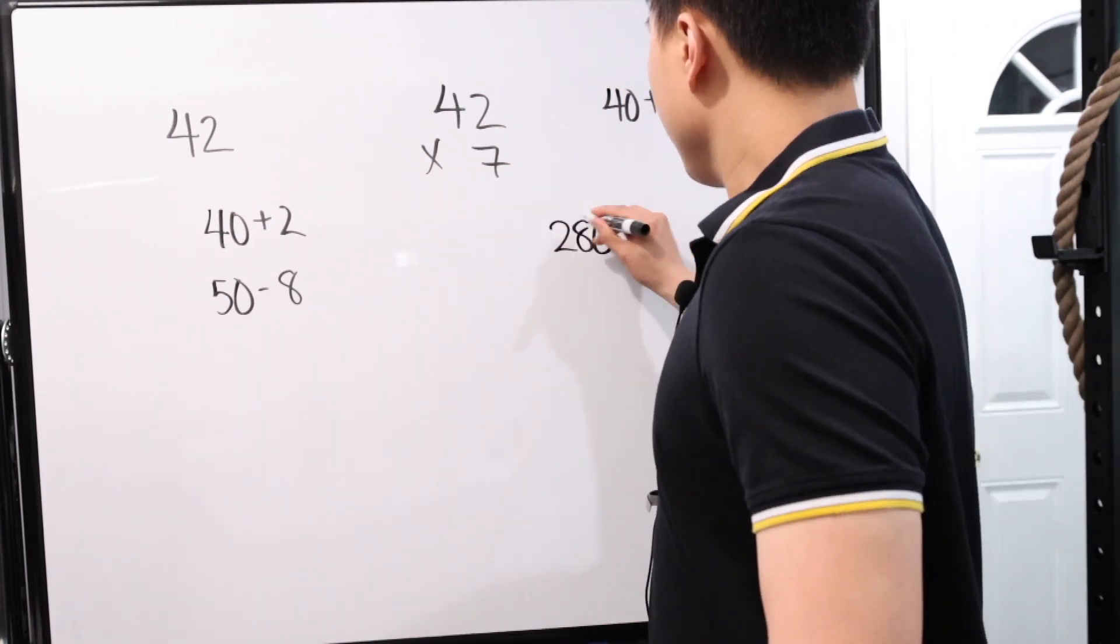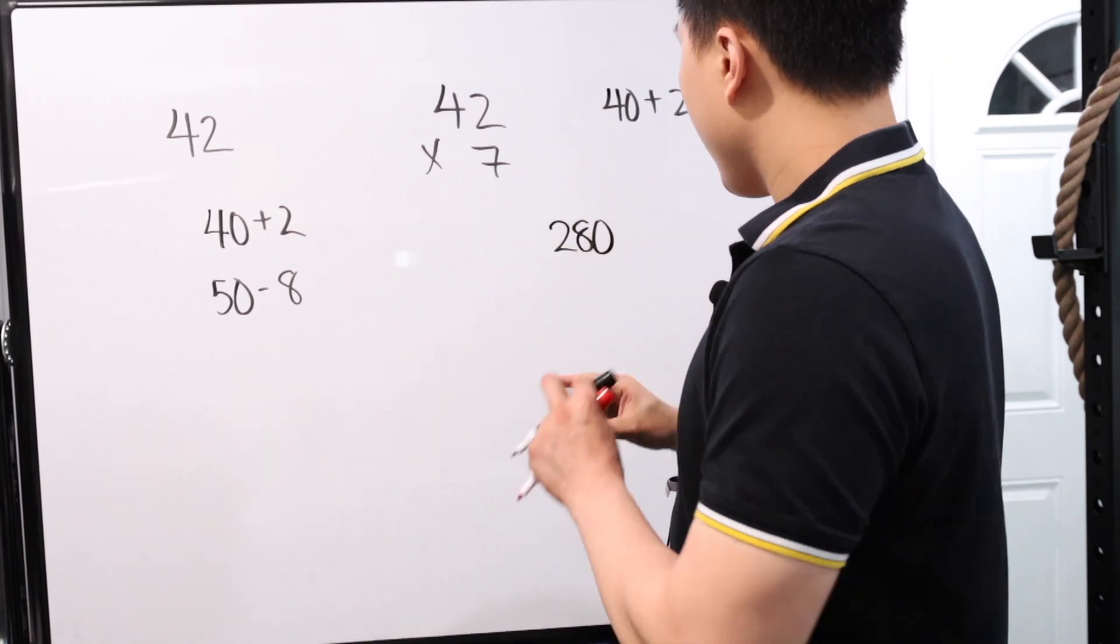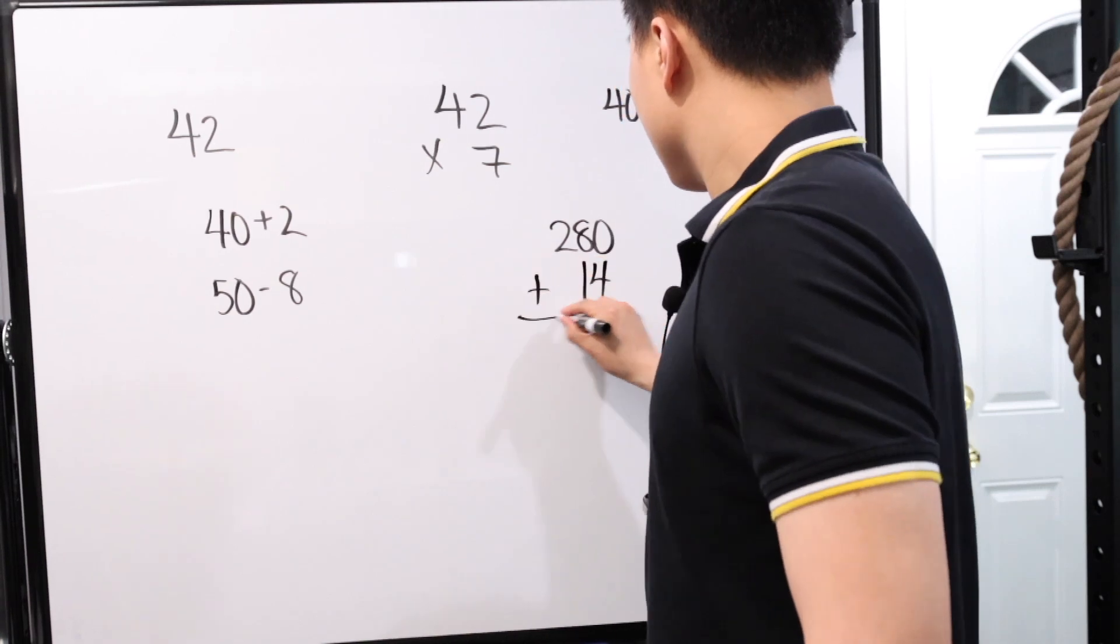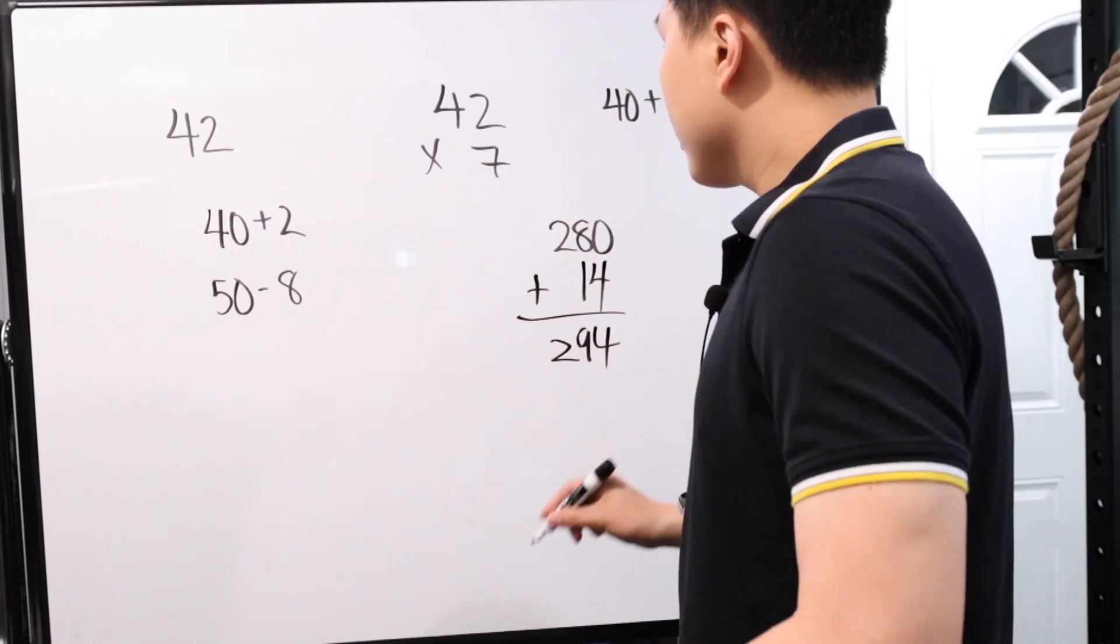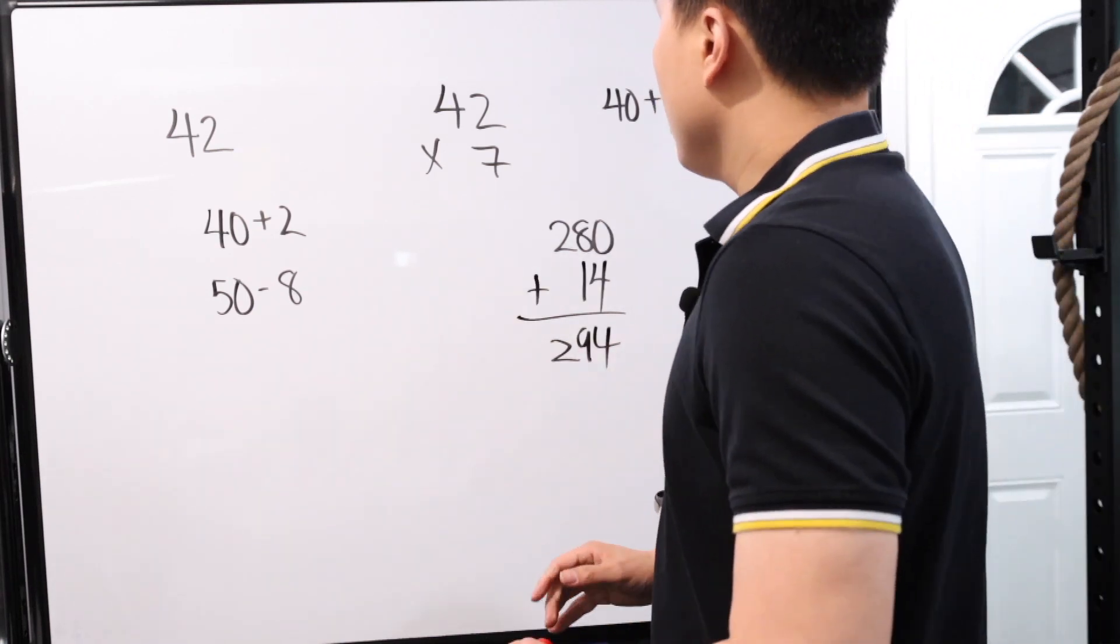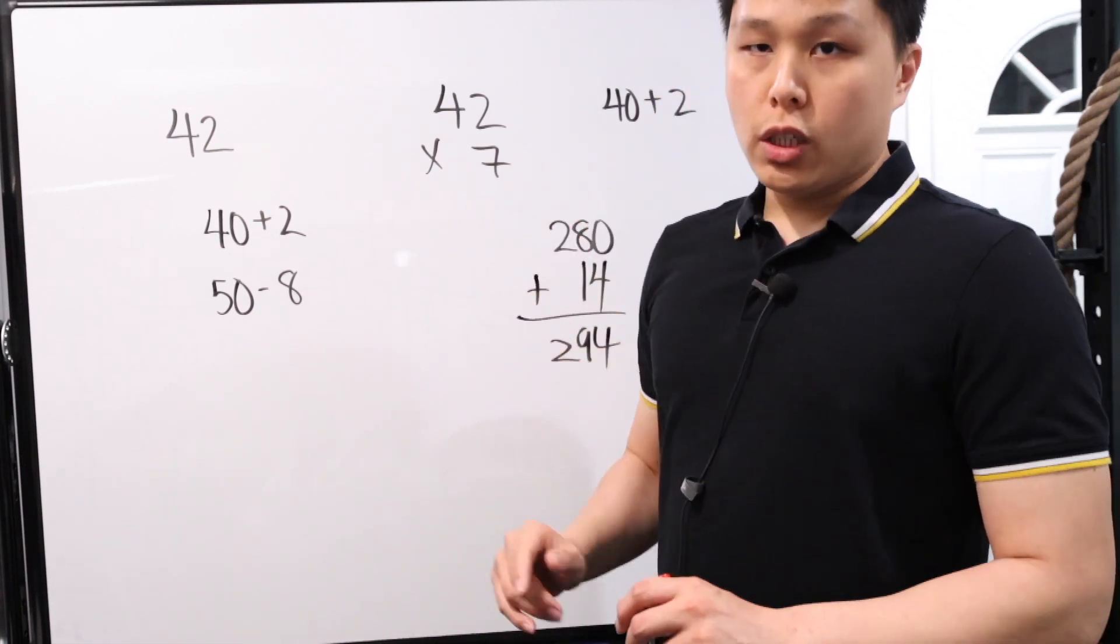Because when you're multiplying, instead of multiplying 42 by a number, 40 by a number is easy because the zero itself is just adding a zero at the end of it. So for example, let's just look at this really quickly. 42 times 7. Yes, you can solve it basically the same way, two times seven, that's 14, one carry over and all that lovely stuff.